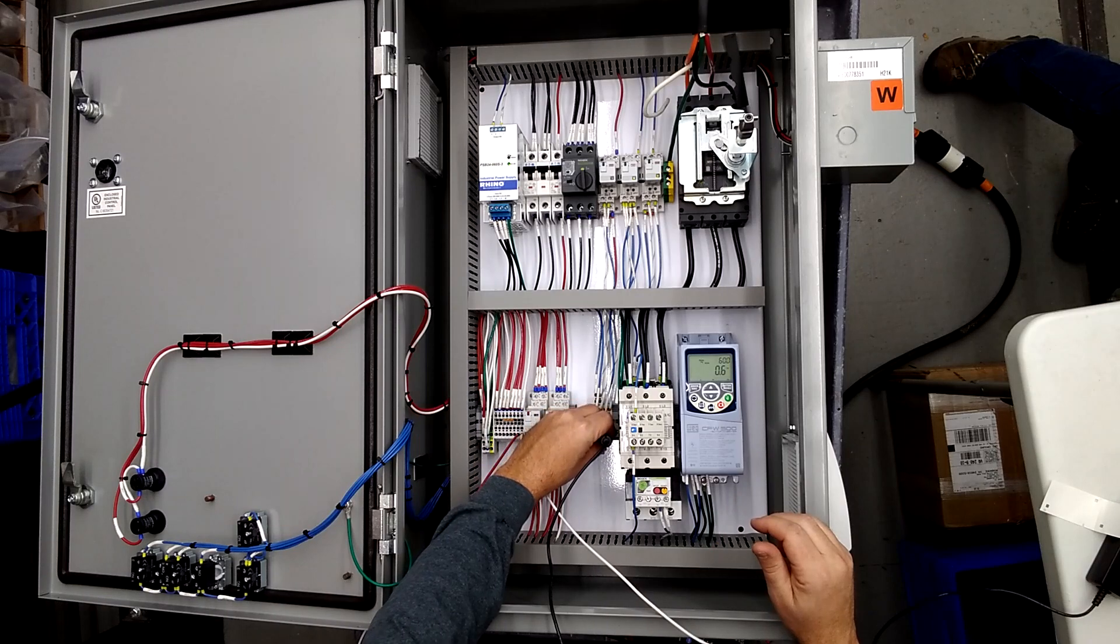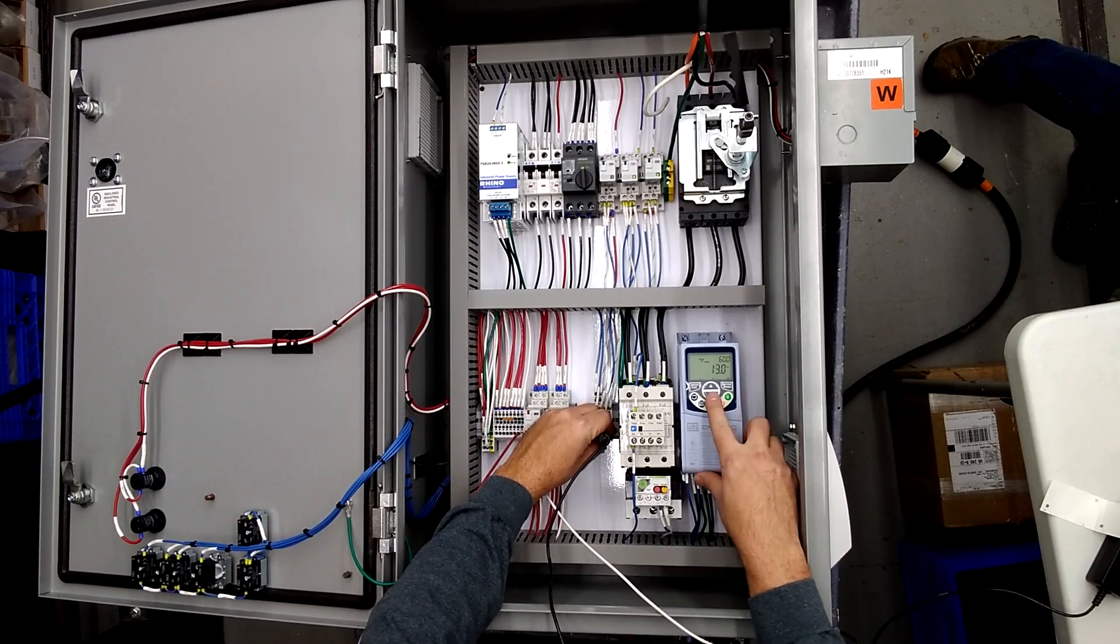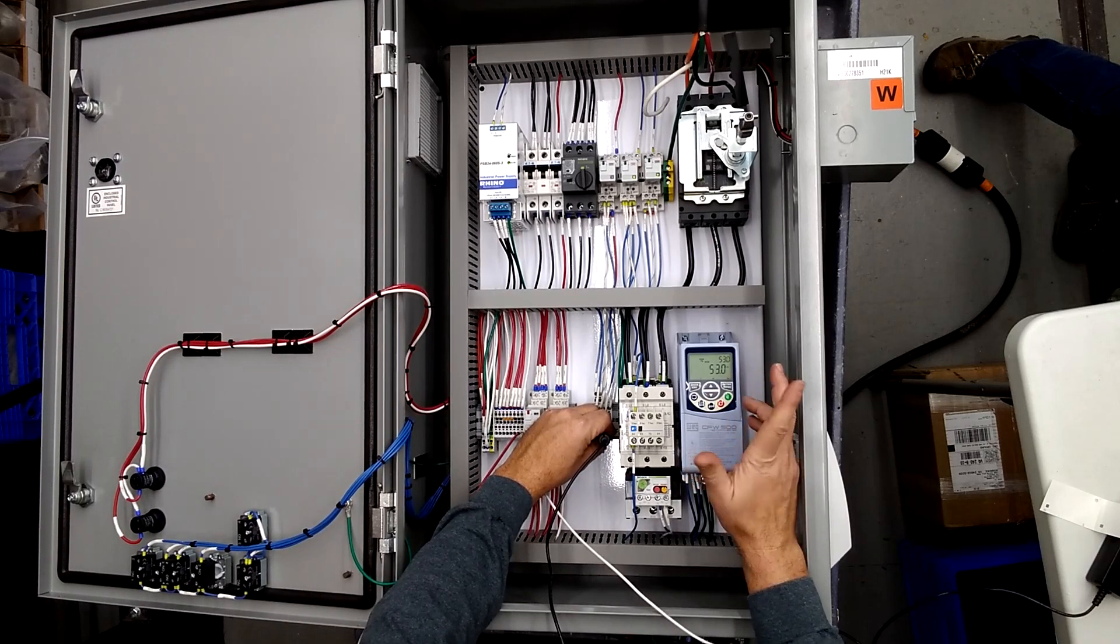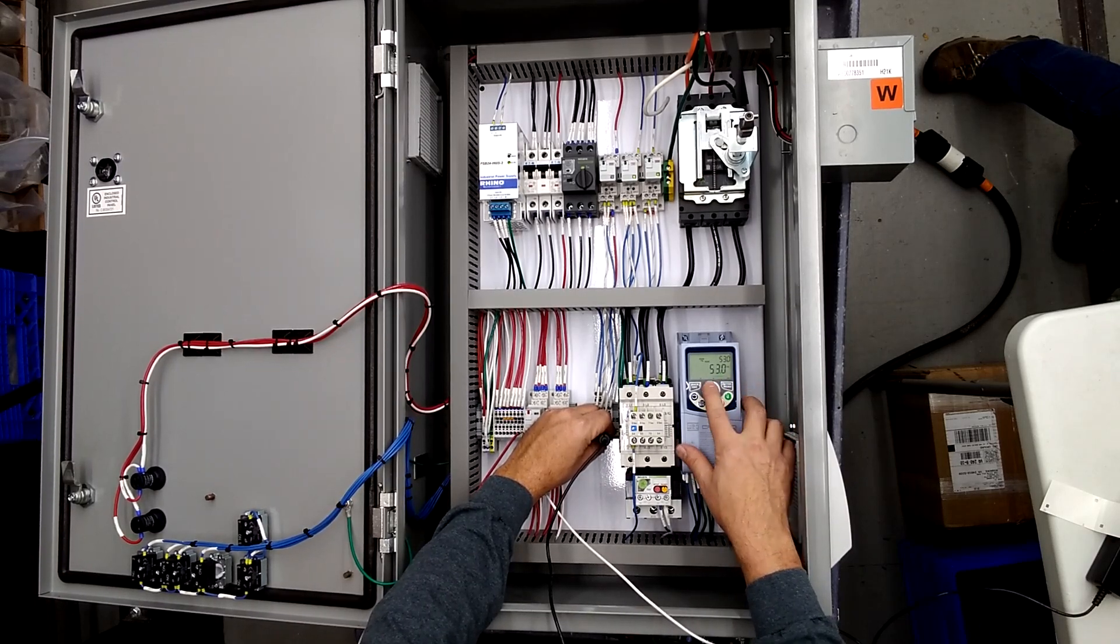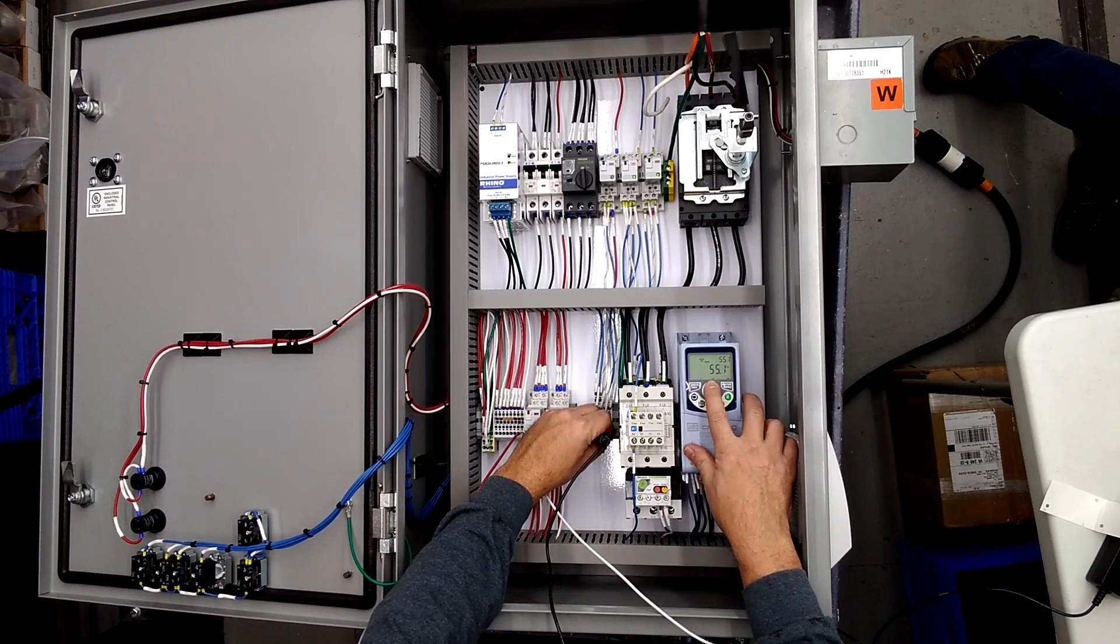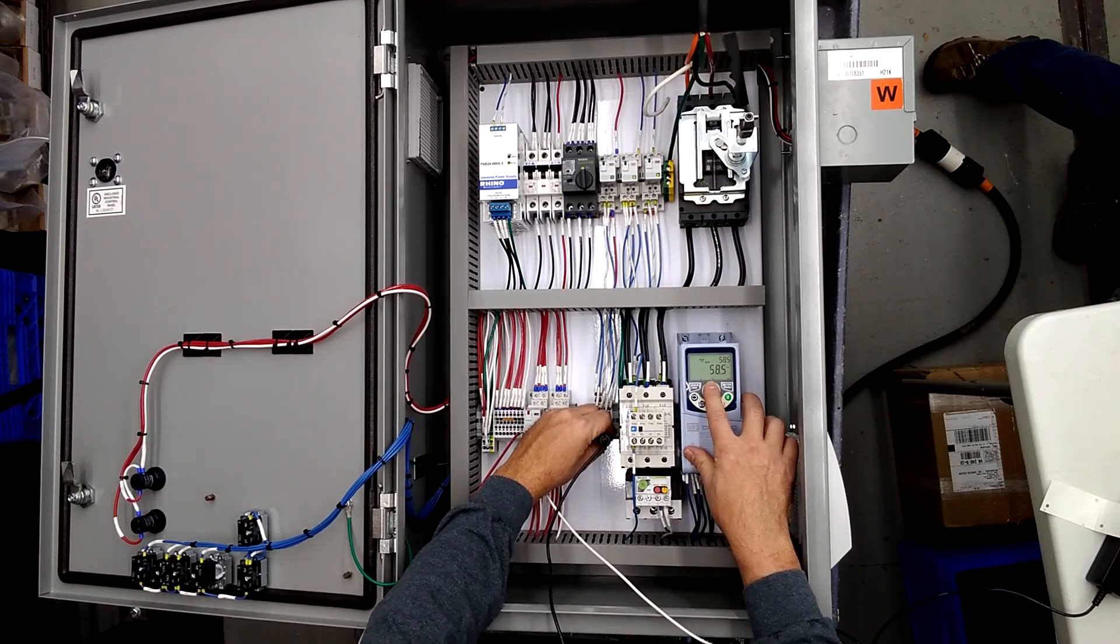Also if you need to adjust the speed just while it's running just press your down arrow and you know I can take it down to let's say 53 hertz and I can hit the up arrow and I can take it back to 60 so really easy to operate there.